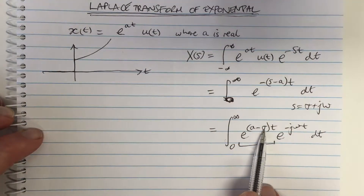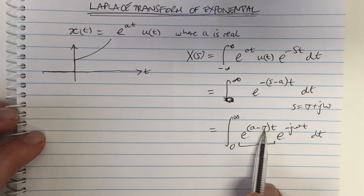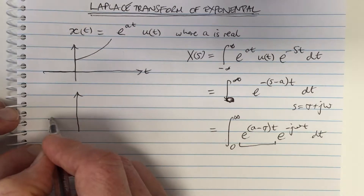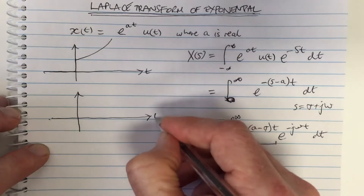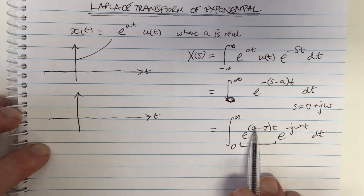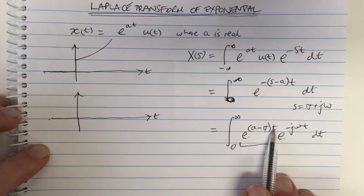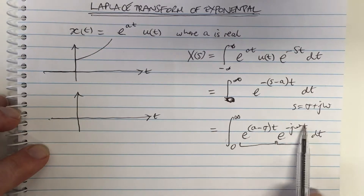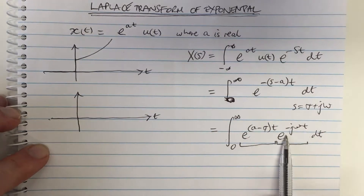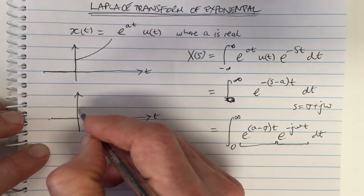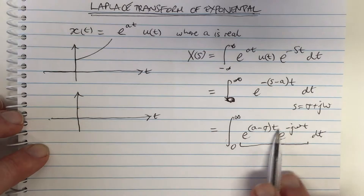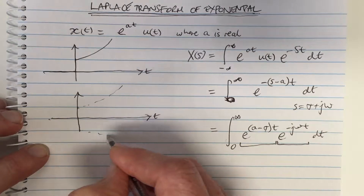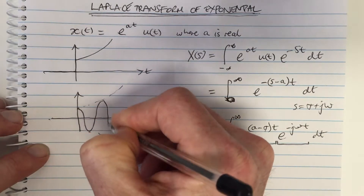Consider σ = 0 with a positive. If σ equals zero and a is positive, then the function e^((a−σ)t) is a growing exponential, multiplied by a complex exponential e^(−jωt) which has constant amplitude. The real part of that complex exponential is a cosine wave, and with the growing exponential, the real part would be a cosine wave with a growing amplitude.